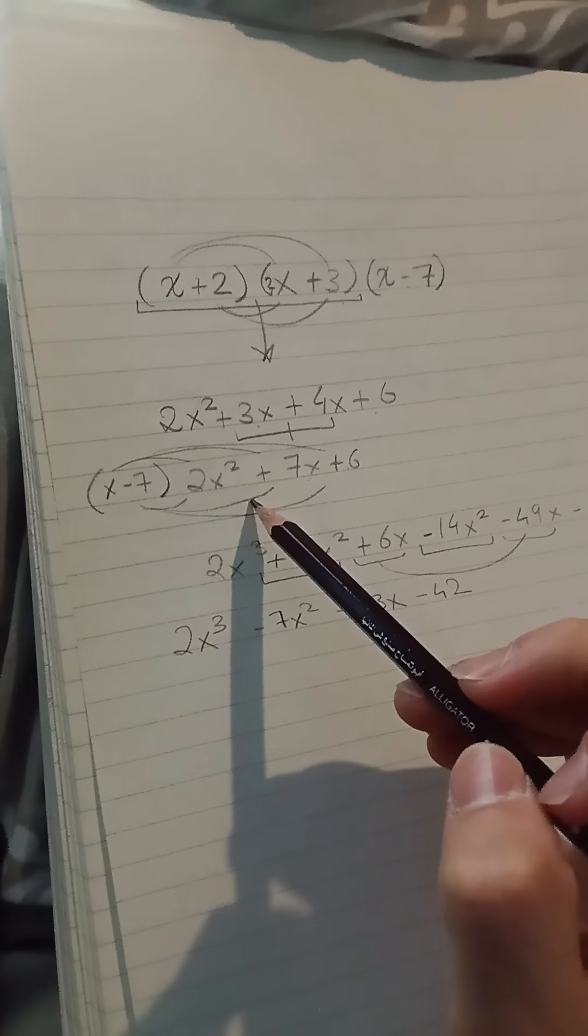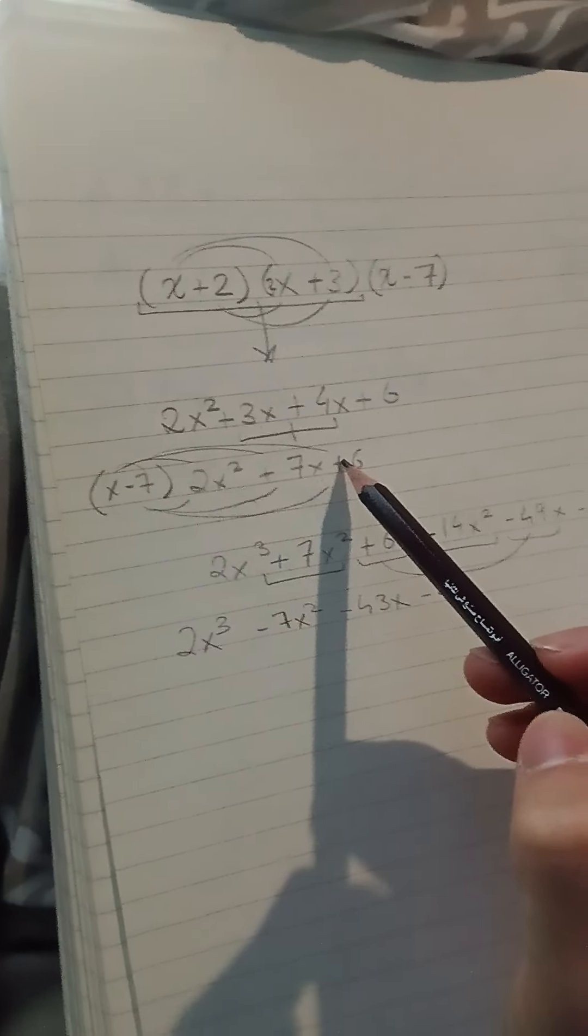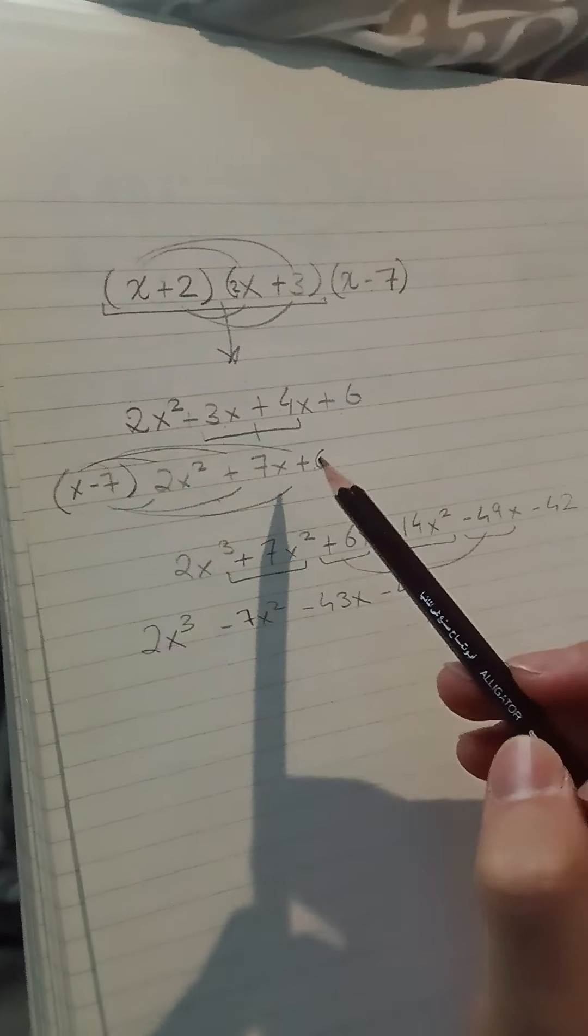x times 2x is 2x squared, x times 3 is 3x, 2 times 2x is 4x, and 2 times 3 is plus 6.